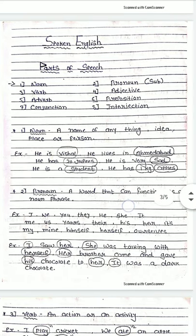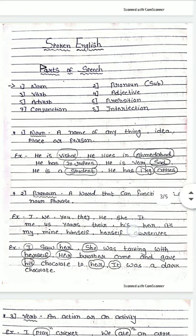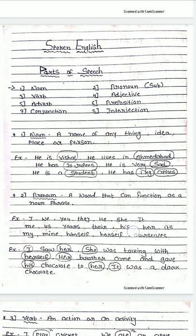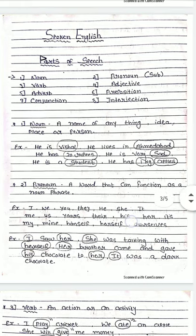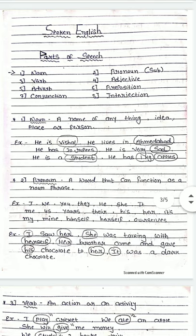We have some examples: 'He is Vishal, he lives in Ahmedabad' — here Vishal and Ahmedabad are nouns, as they are names of a person and a city. 'He has 20 rupees' — 20 rupees is the name of a thing. 'He is very sad' — sad is the name of a feeling. 'He is a student' — student is a common noun. 'He has one kg apple' — one kg is a name of measurement and apple is a name of a fruit.